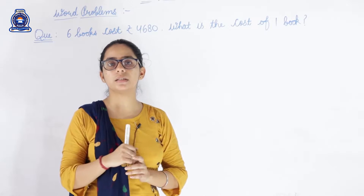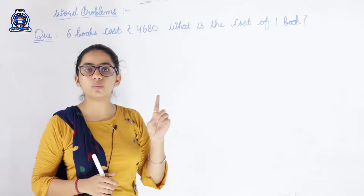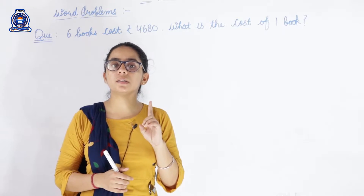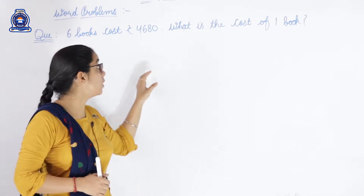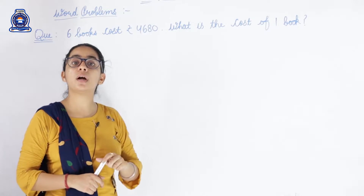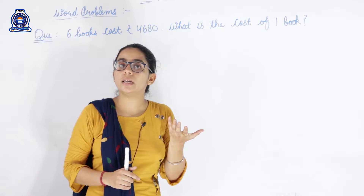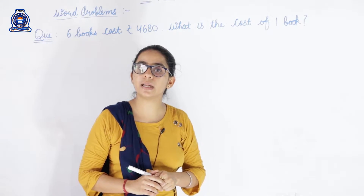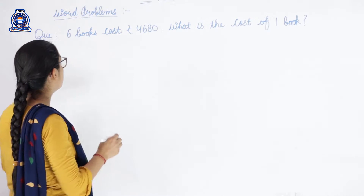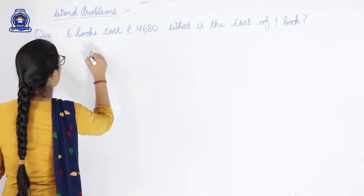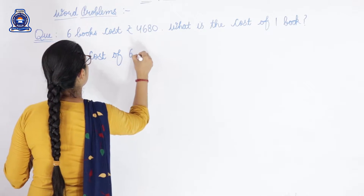We do division. Here we are given the value of six books — rupees four thousand six hundred eighty — and we have to find the value of one book. So we will do division. First, we will write our lines: cost of six books...